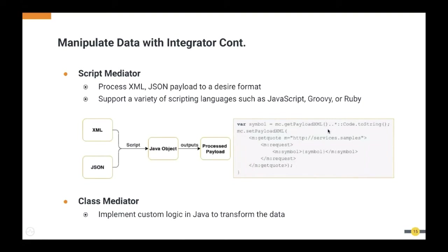The Script Mediator is a powerful solution for complex processing that cannot be handled by simpler ESB Mediators. For example, if you need string replacement in the payload after checking complex conditions, the Script Mediator can handle that using a JavaScript object. The Script Mediator supports scripting languages such as JavaScript, Groovy, and Ruby.